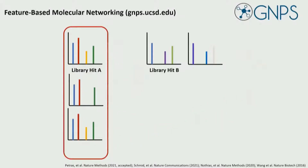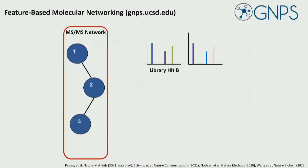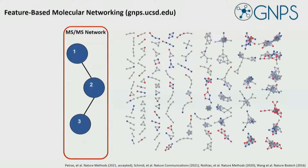We then dereplicate some of them against our spectral library and draw them as nodes inside the network. I think when we look at this example it's really tempting because it facilitates these complex data sets — even if we don't know the identities of most of them.